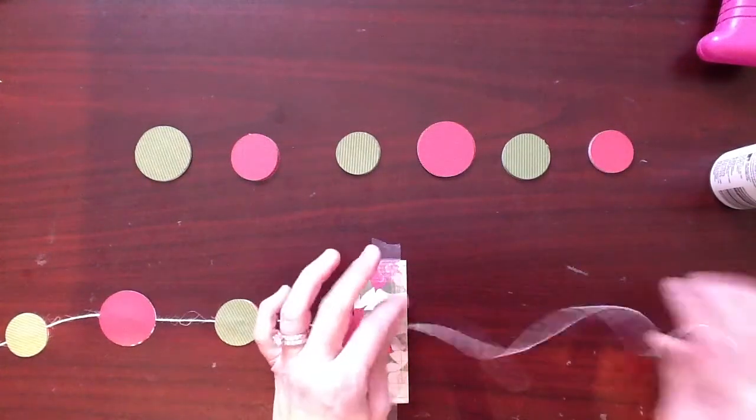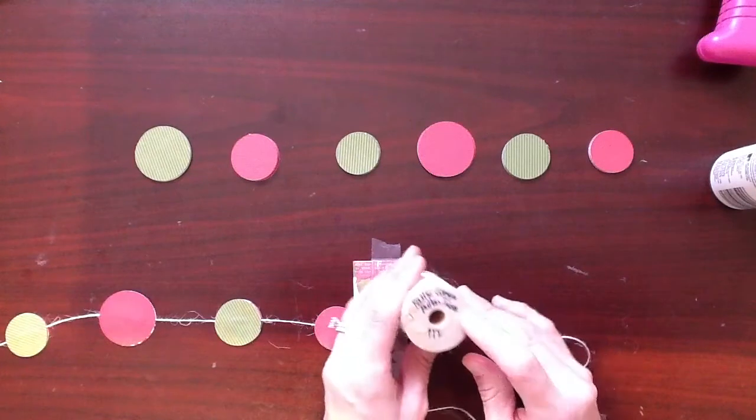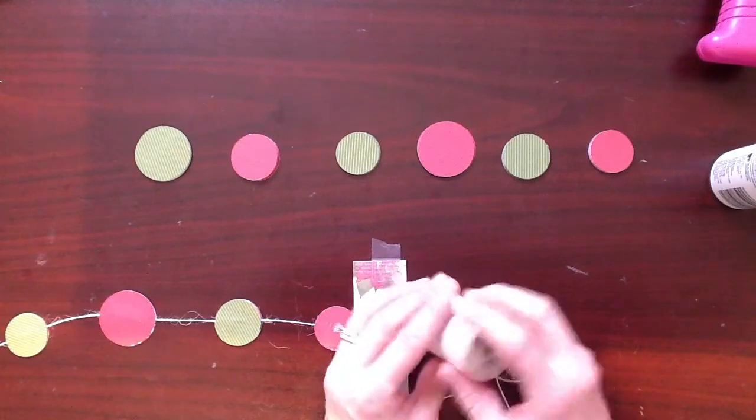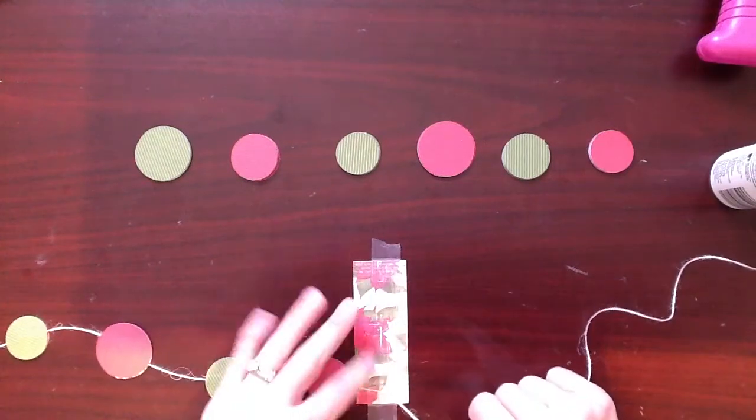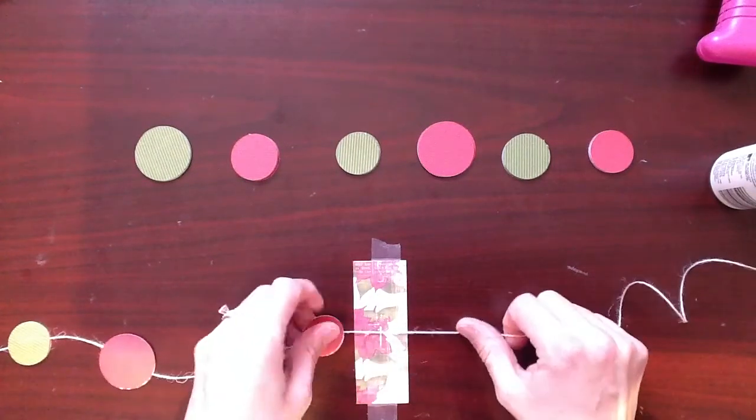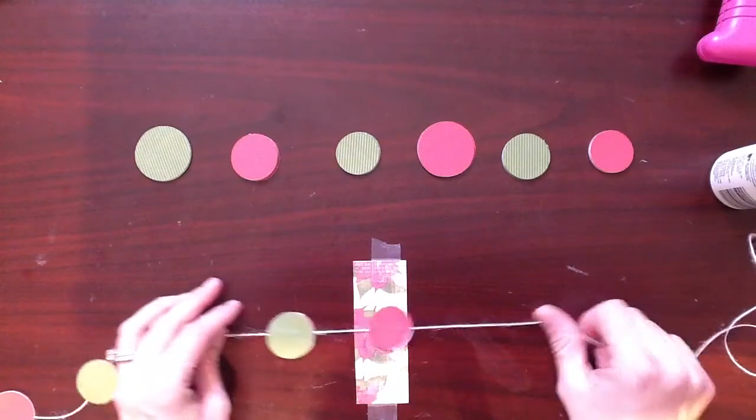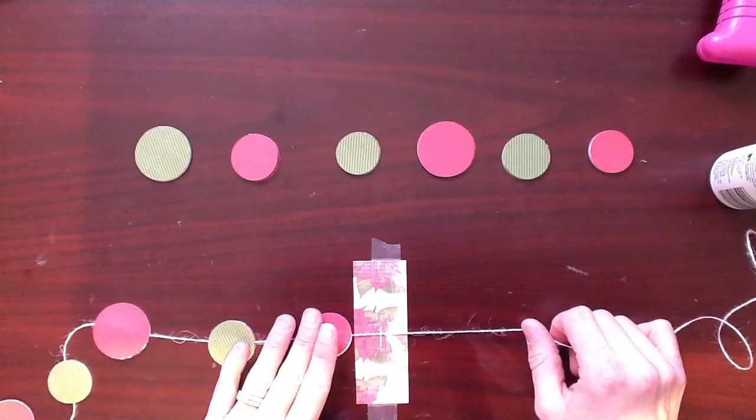And what I'm using for string is rustic cream button twine from Paper Tray Ink, and I'm just creating the garland right off the spool. And I used a little swatch. This is going to be my measuring guide to make sure that all my circles are spaced well apart.